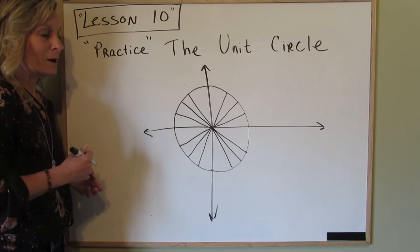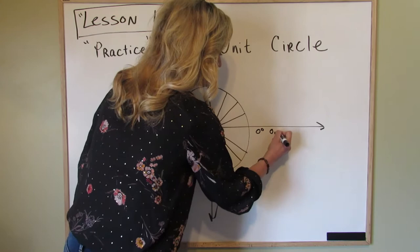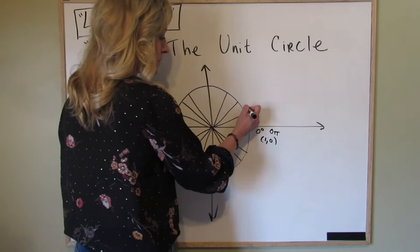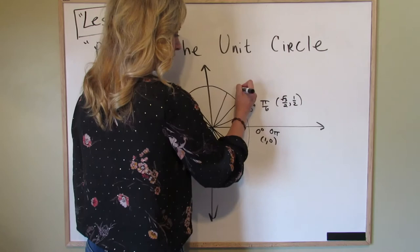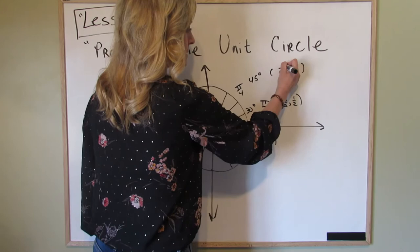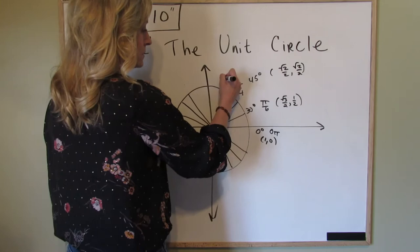Okay, so here we go. Starting at zero, we have zero degrees which is zero pi, and the cosine is one and the sine is zero. Coming around the circle we have 30 degrees, that's pi over 6. The cosine is square root of 3 over 2 and the sine is one half. Then we have pi over 4, which is 45 degrees. The sine and the cosine are both square root of 2 over 2.